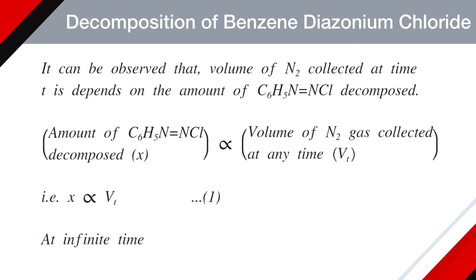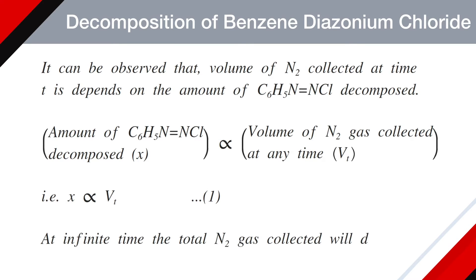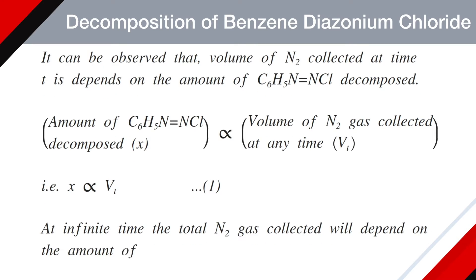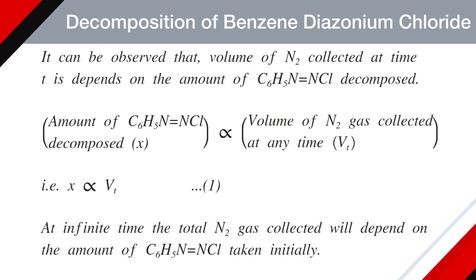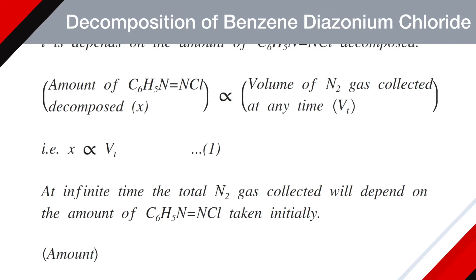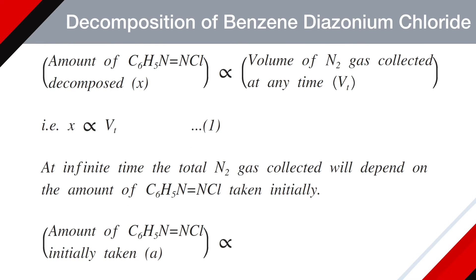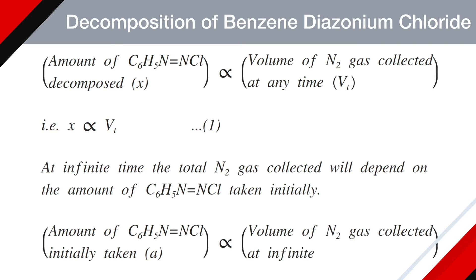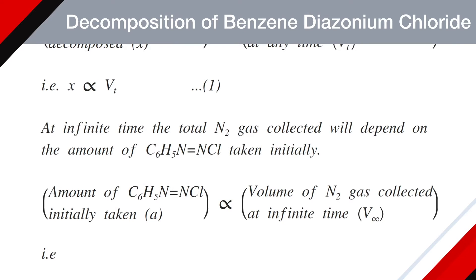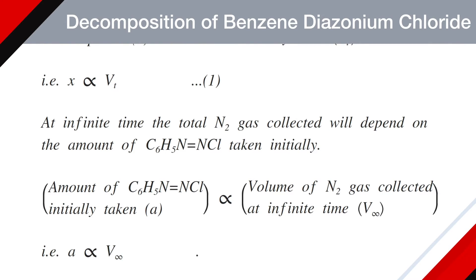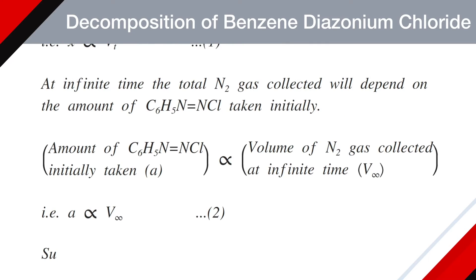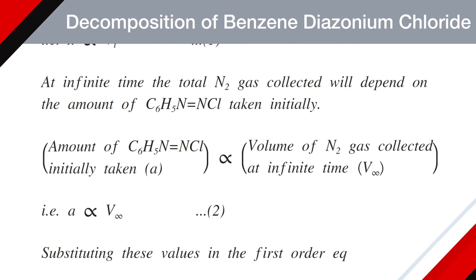At infinite time, the total nitrogen gas collected will depend on the amount of benzene diazonium chloride taken initially — meaning all of the benzene diazonium chloride is decomposed and the maximum amount of nitrogen gas is formed. So we can say the amount of benzene diazonium chloride initially taken, A, is proportional to the final volume of gas collected at infinite time, V∞, or A ∝ V∞. This is equation number two.